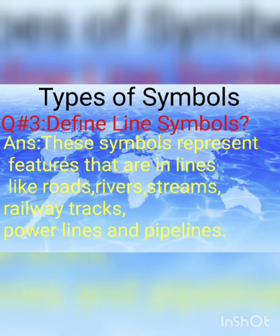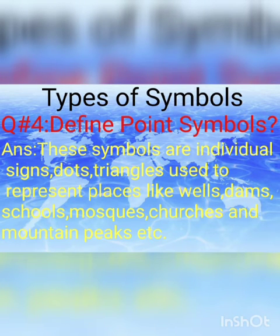The third question: define line symbols. Line symbols ہمیں کسی بھی country کے roads, rivers, streams, power lines اور railway tracks کو show کرتے ہیں on the map.